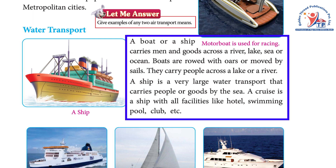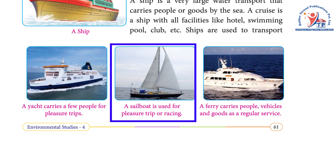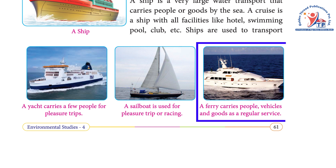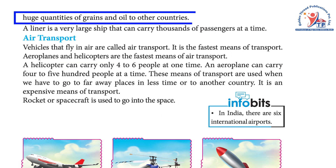A cruise is a ship with all facilities like hotel, swimming pool, club, etc. A yacht carries a few people for pleasure trips. A sailboat is used for pleasure trips or racing. A ferry carries people, vehicles, and goods as a regular service. Ships are used to transport huge quantities of grains and oil to other countries.